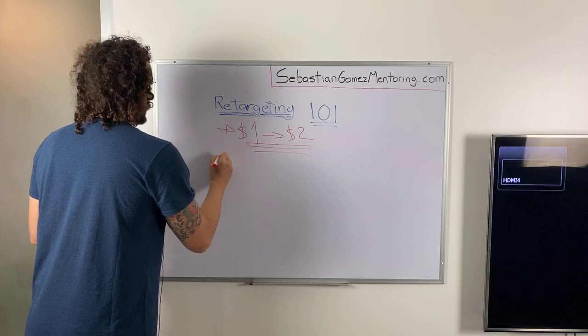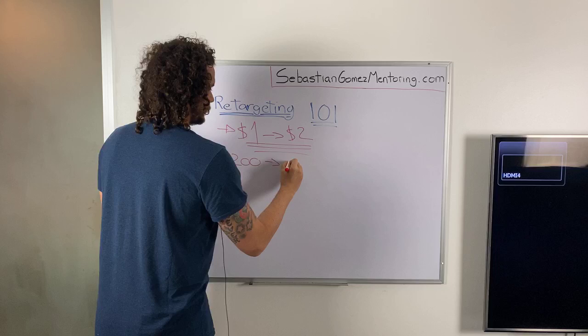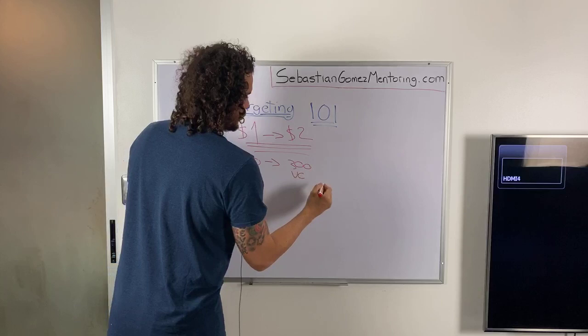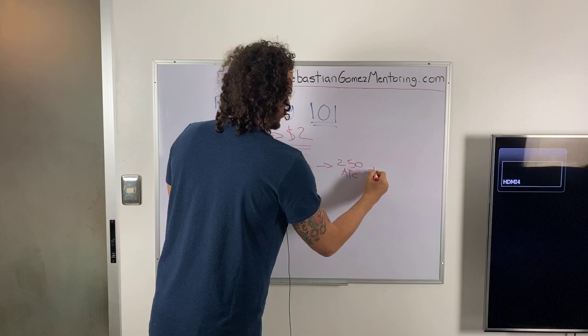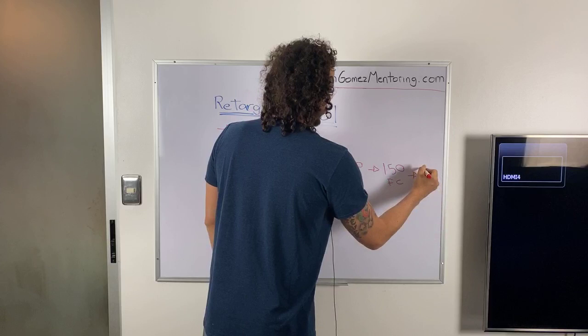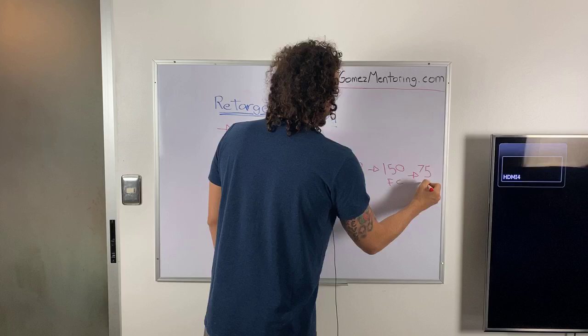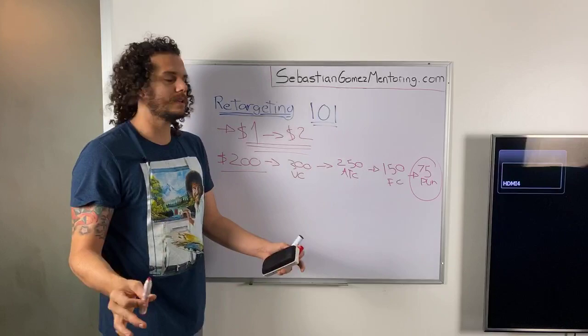Let's do another example. Let's say you spent $200 on Facebook advertising, and this generated 300 view contents. If this is a Shopify store, we generated 250 add to carts, 150 initiate checkouts, and let's say 75 purchases. So we got 75 purchases out of the $200 that we spent.